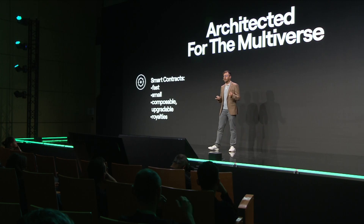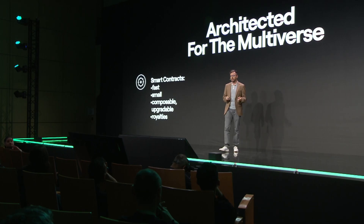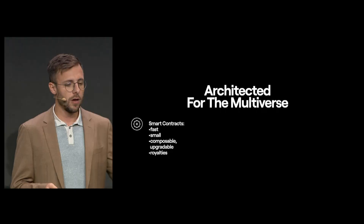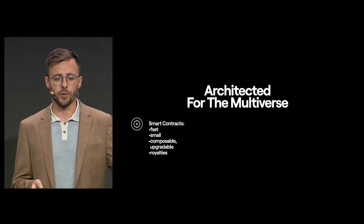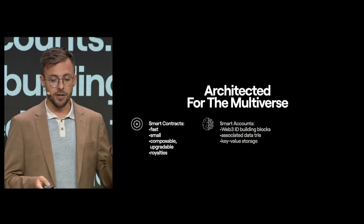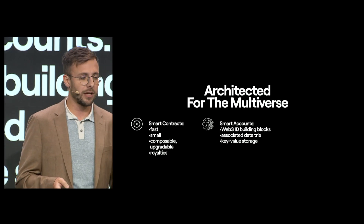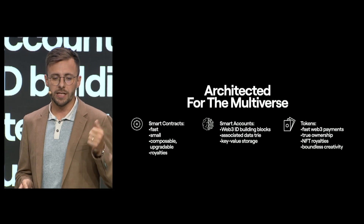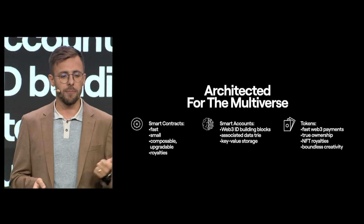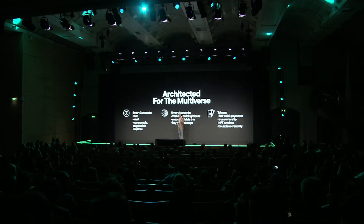So I will leave you with these key facts about the Aeron network execution environment. Smart contracts: fast, small, composable, upgradable, and 30% royalties for developers. Smart accounts: Web3 ID building blocks, associated data tree, key-value storage, built-in functions. Tokens: fast Web3 payments, true ownership, royalties for NFTs, boundless creativity. Thank you.